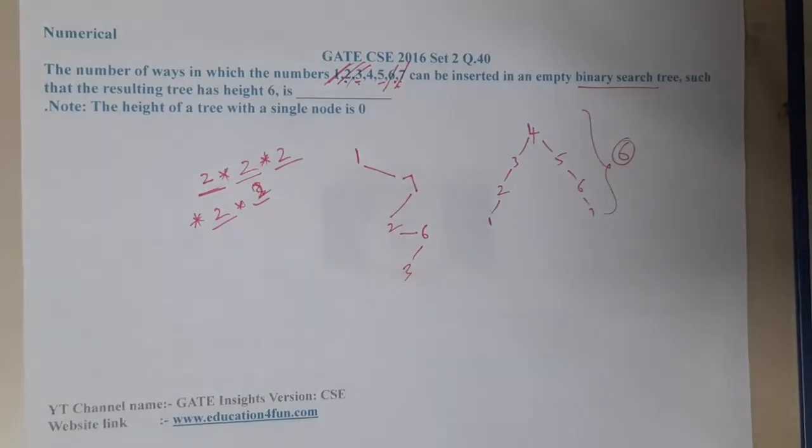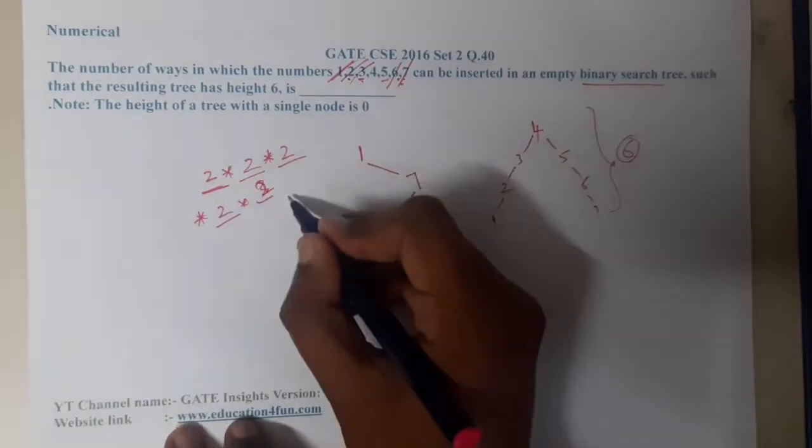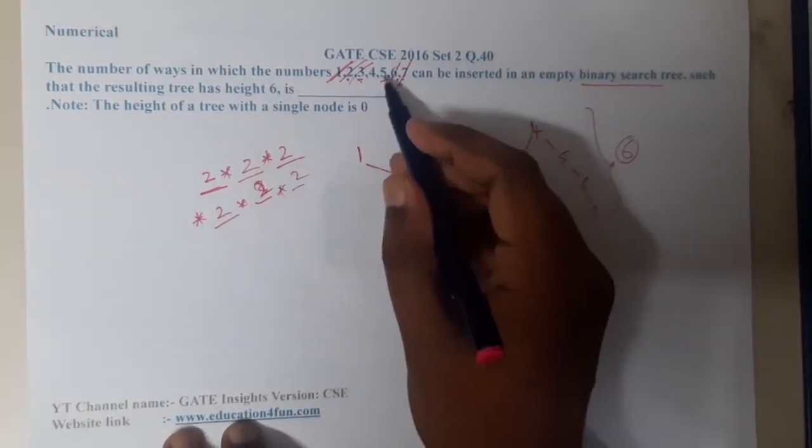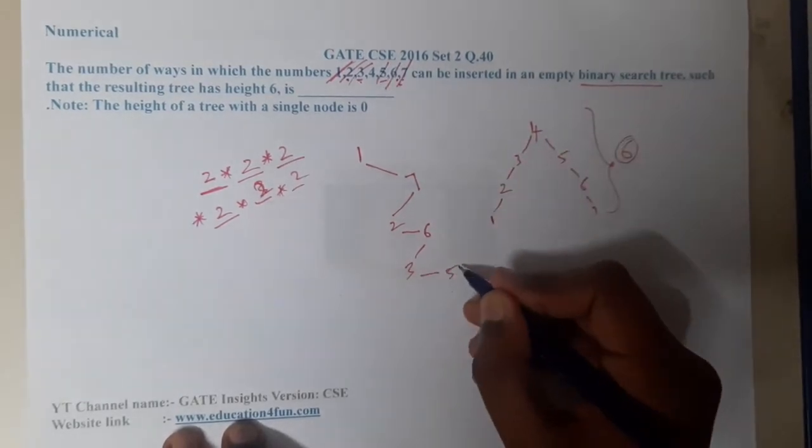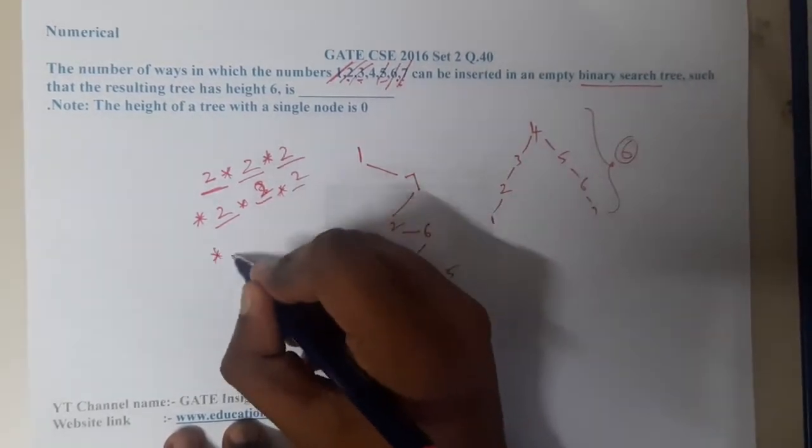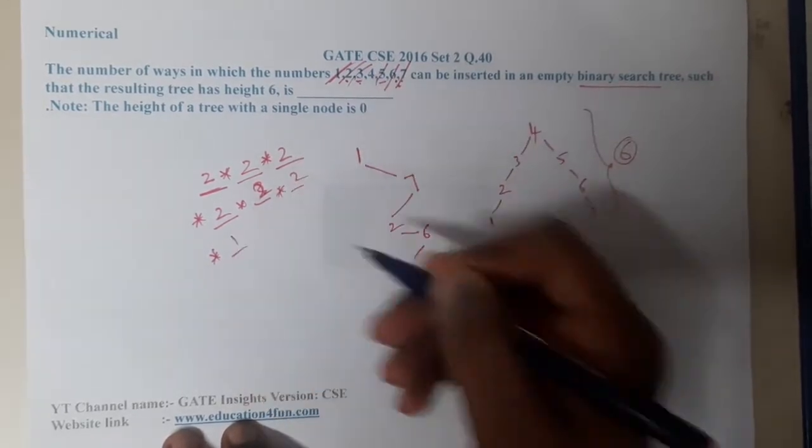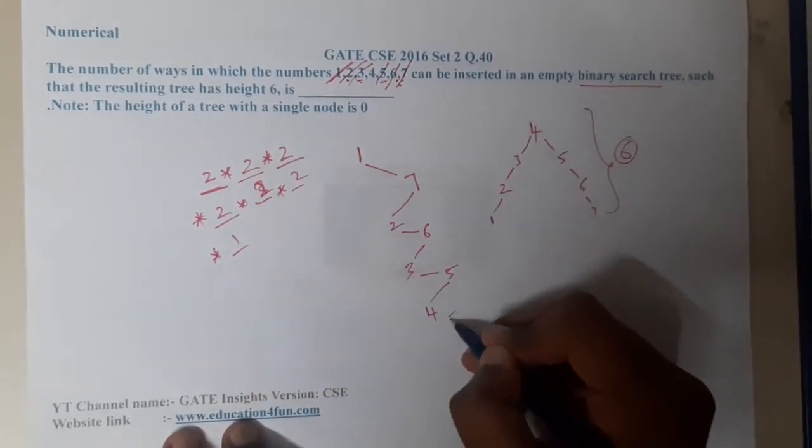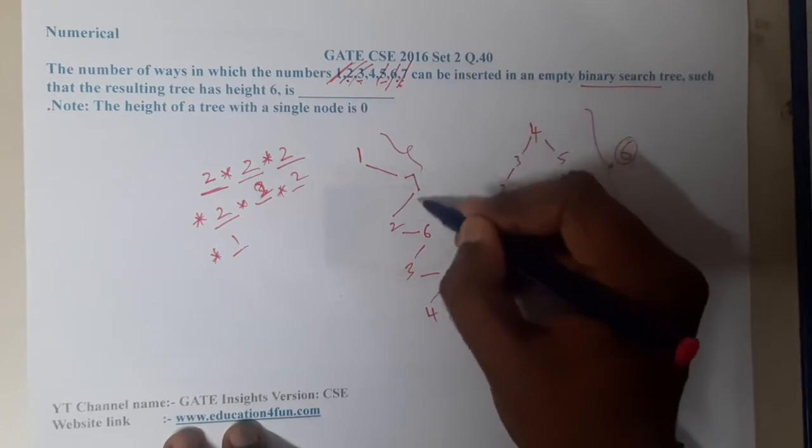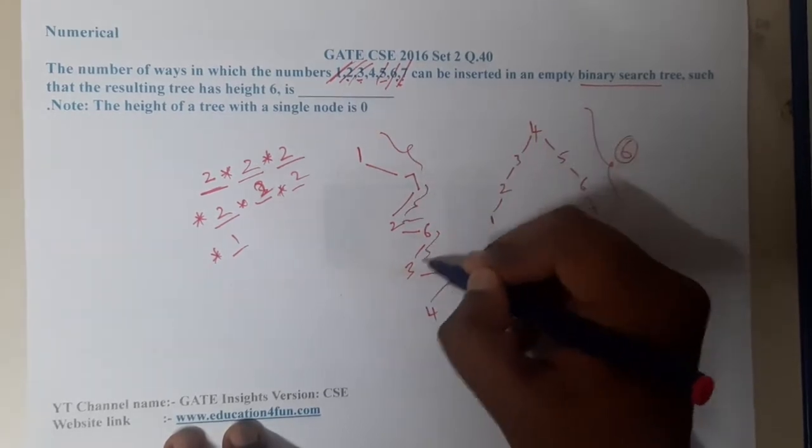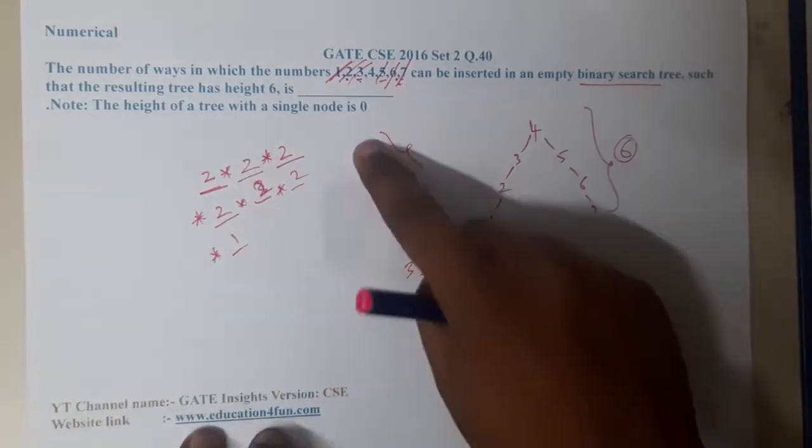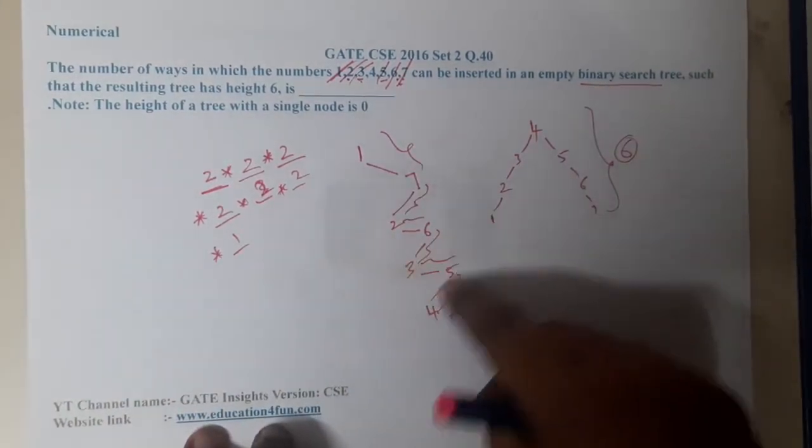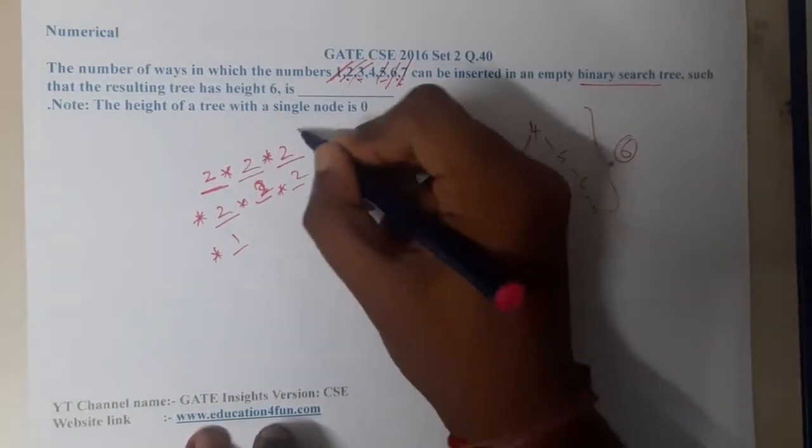Now again we are having an option between 3 and 5. We are selecting 3, so 3 will come here. After 3, again we are having two choices, among which I selected 5. Again at the end, how many options are we having? We are only having one option, so we need to take 4. Now check what is the height - it is 1, 2, 3, 4, 5, 6. So it is nothing but the path count.